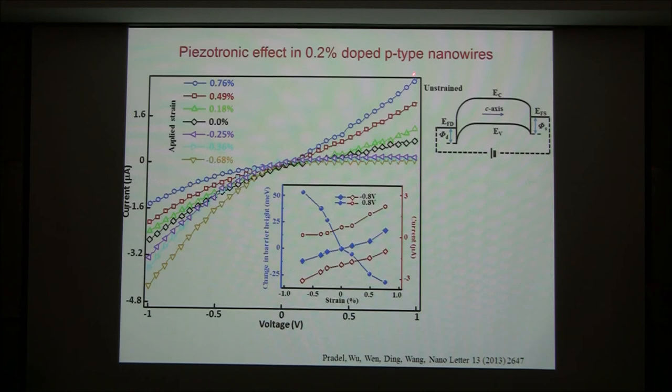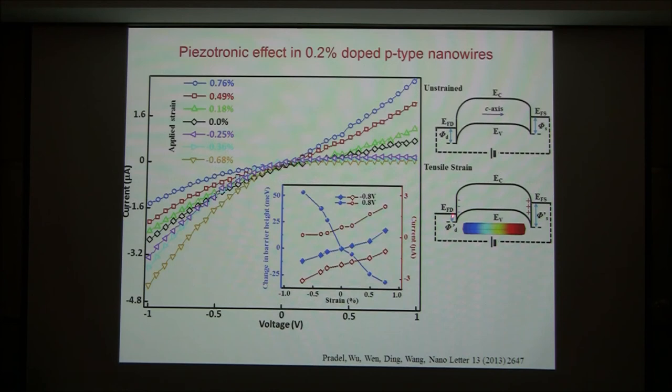This is the transport measurement. The dark curve is the transport at zero strain. On the 0.76% tensile strain, you see the current increases at the forward bias side but drops at the reverse bias side. This side increases, this side drops. Why? It's because different polarity of the polar charge appears at the two different ends, which can raise or lower the barrier for P-type carrier transport.